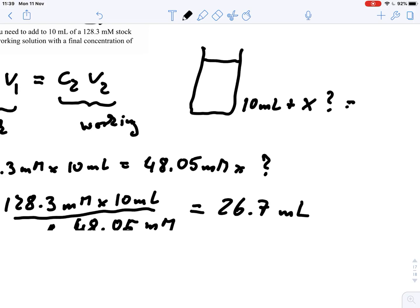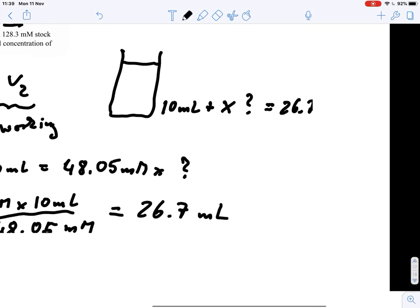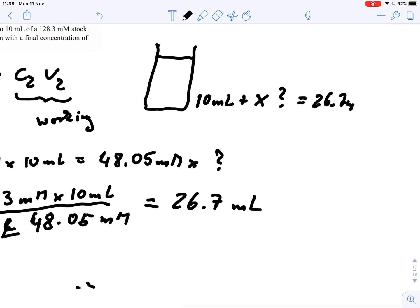And this adds up to 26.7 milliliter. So we can very easily figure out that the amount of water that we have is 26.7 minus 10 milliliter. And our amount of water that we have to add would be 16.7 milliliter of water that we need to add to give us the 26.7 milliliter.